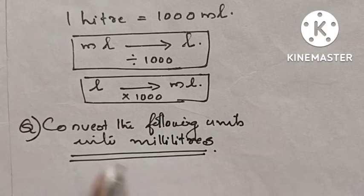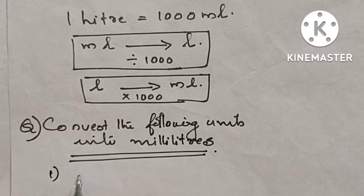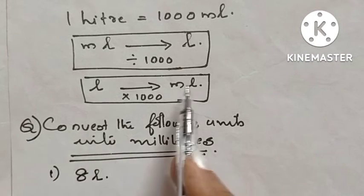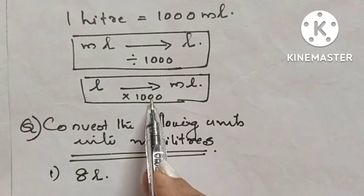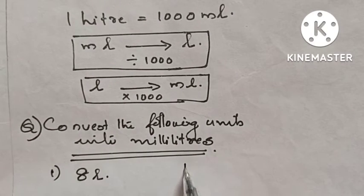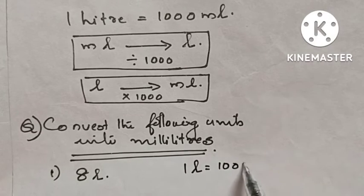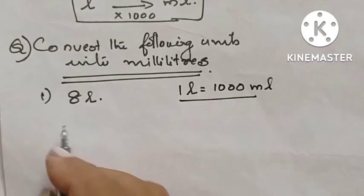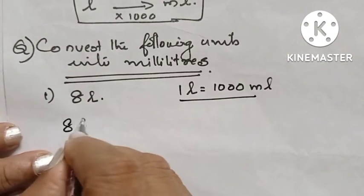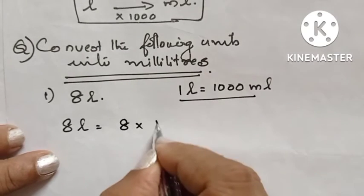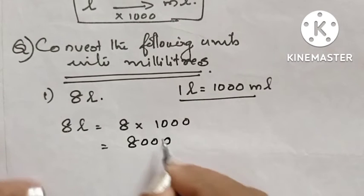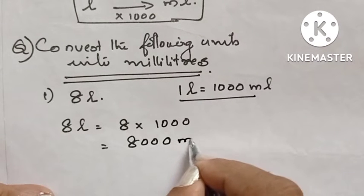Here the question is: convert the following units into milliliters. The first question is eight liters. We know that when we are converting liters to milliliters, we have to multiply by one thousand, because one liter equals one thousand milliliters. Therefore, eight liters equals eight into one thousand, which equals eight thousand milliliters.